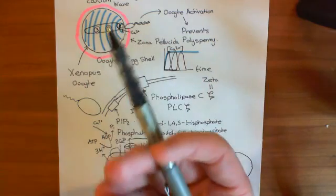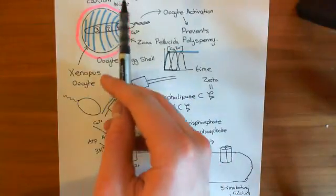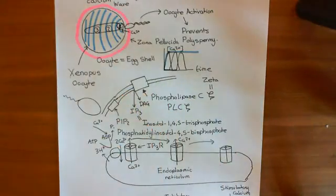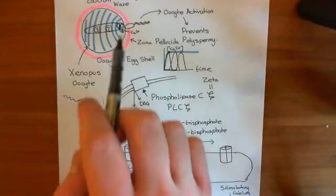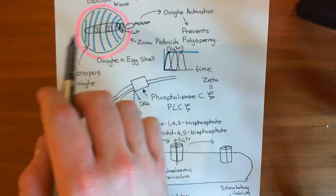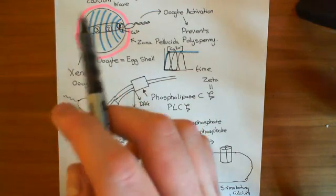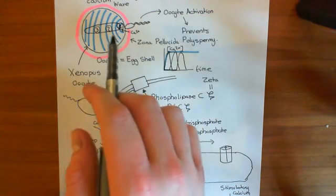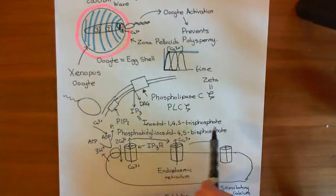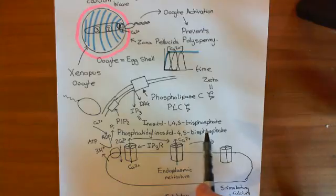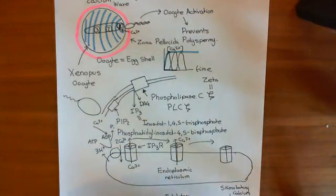This transient opening and then closing of the IP3 receptors propagates forward. With it, that causes a transient release of calcium, so a spike in the calcium level, which then falls, and that propagates forward throughout the oocyte. Then you don't just get one wave of calcium — these continue propagating. And the frequency with which you propagate these calcium waves seems to be proportional to the concentration of inositol-1,4,5-trisphosphate that you have in the cytoplasm.